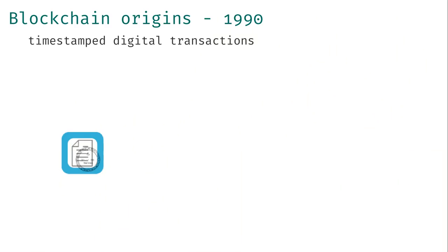So in 1990, Harbour and Stonetta proposed in a scientific paper a cryptographical solution for binding a timestamp indivisibly to a digital document. The timestamp and the digital document are merged into a new document and can't be separated from each other without being damaged. For now, let's pretend this block contains our digital document and the timestamp, and both are bound by some mystical, fancy cryptographic technique, which is represented by this blue frame.